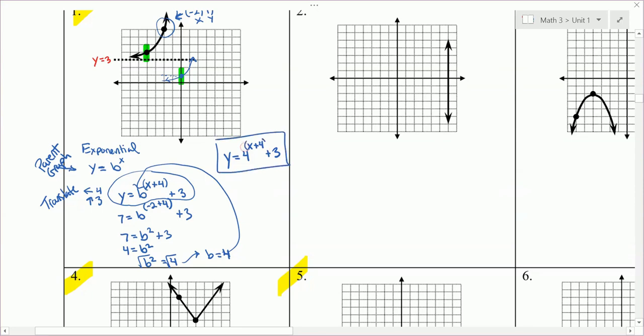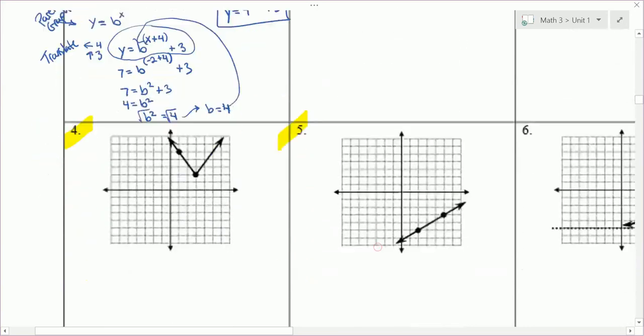Our final answer is y equals 2 to the x plus 4 plus 3. You can put parentheses around that x plus 4. Let's go to number 4 now.